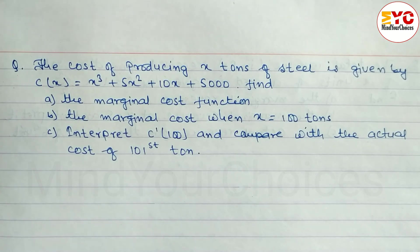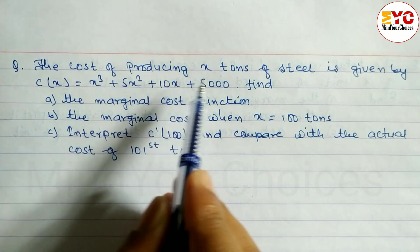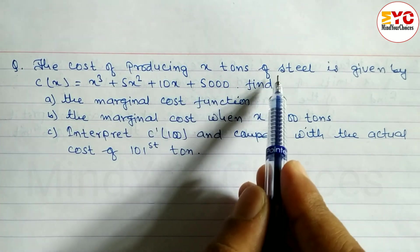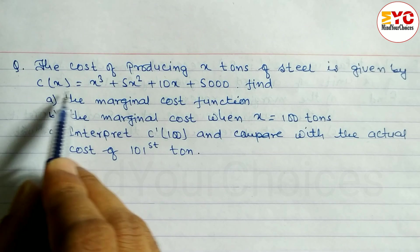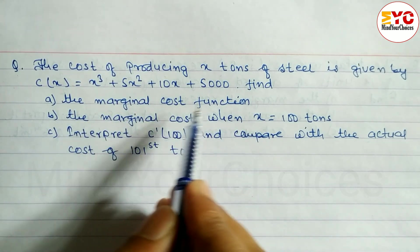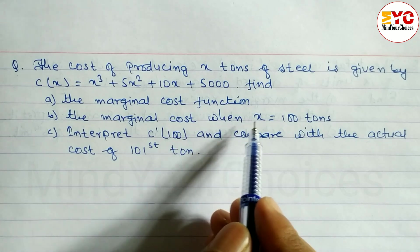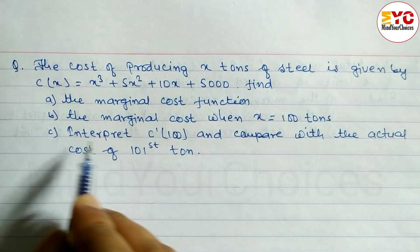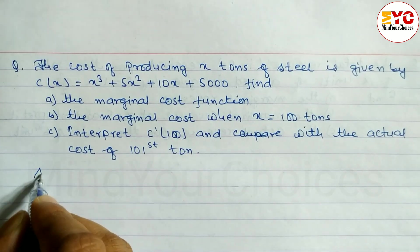This is a Class 11 Application of Derivatives question. The cost of producing x tons of steel is given. We need to find the marginal cost function, then the marginal cost when x is equal to 100 tons, and interpret it. So let's take a start here.